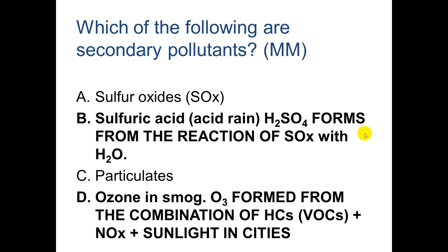So SOX is the primary pollutant and sulfuric acid is the secondary pollutant. Ozone is formed from the combination of hydrocarbons — an example of a VOC from unburned fuel in a car engine — plus nitrogen oxides in the exhaust, plus sunlight. This is very common in cities like LA. So ozone is the secondary pollutant, and the hydrocarbons and NOx are the primary pollutants.